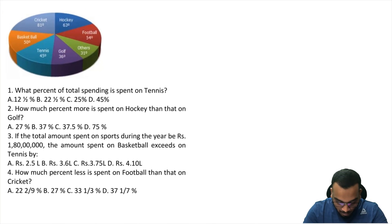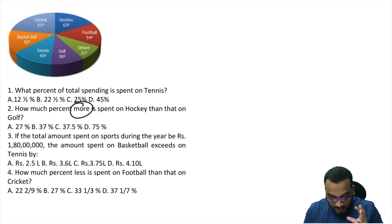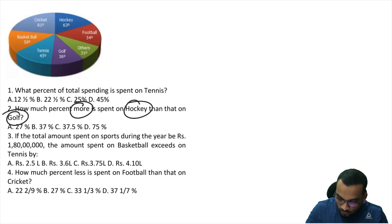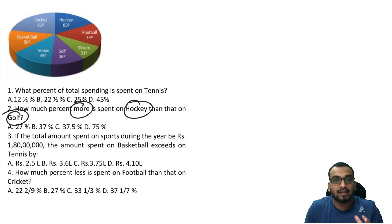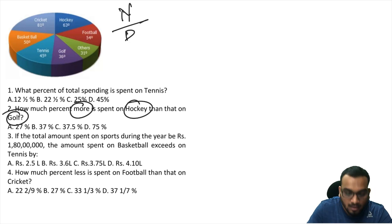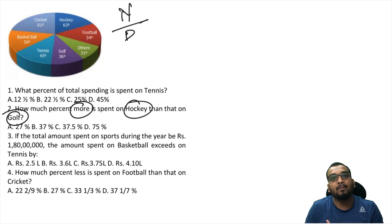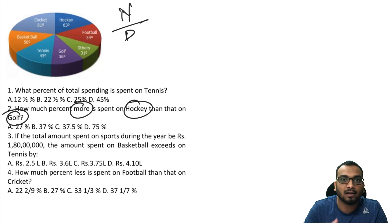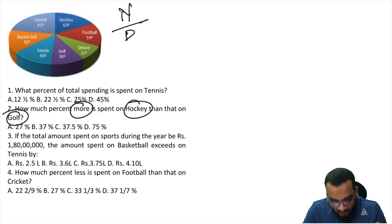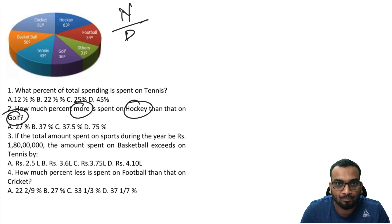Question 2: How much more is spent on hockey than on golf? The question asks for the difference as a percentage. Here we need to be careful about numerator and denominator — n upon d. When you are appearing for speed-based exams like Bank PO, CET, CMAT, MAT, you might make the mistake of swapping numerator and denominator. This happens a lot.